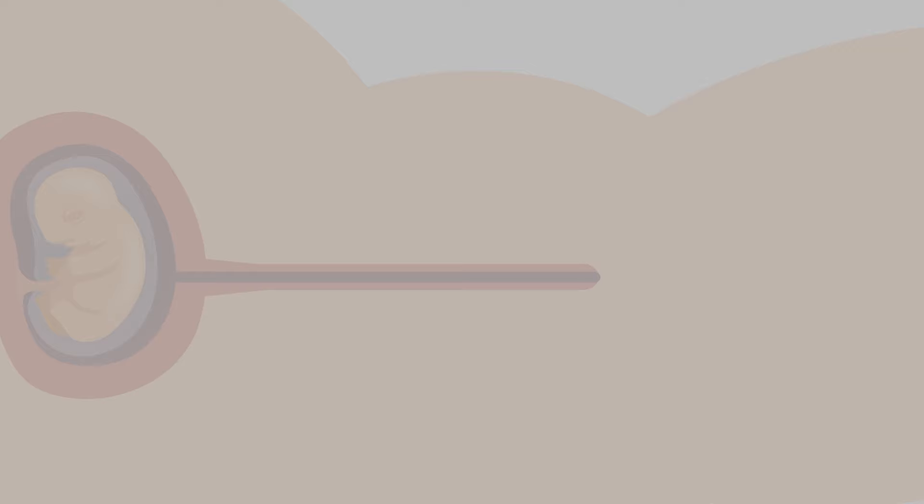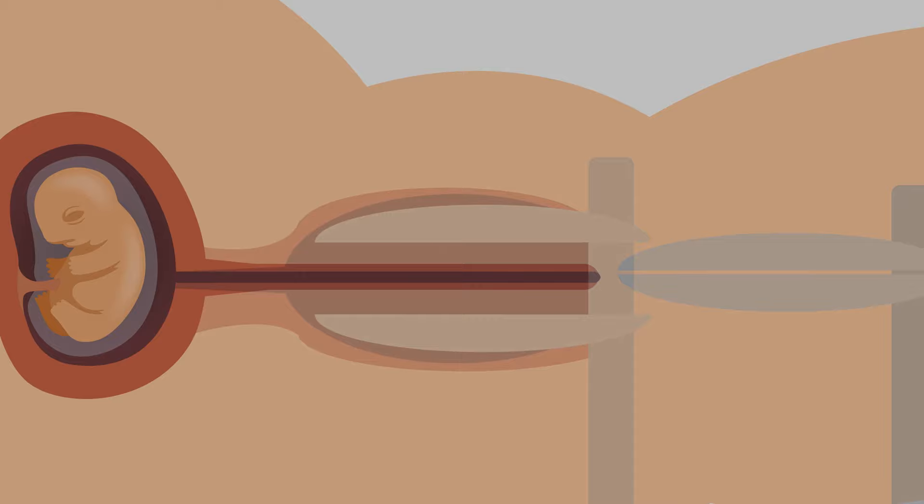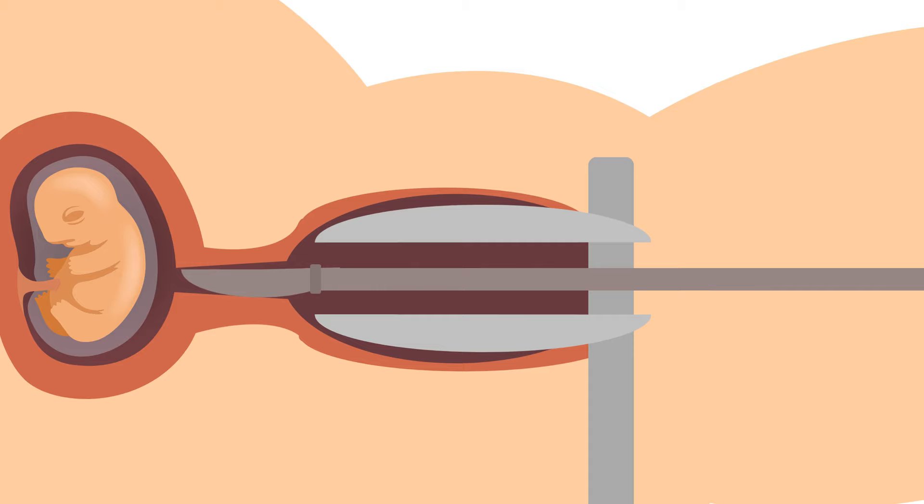The abortionist will insert a tool called a speculum into the woman's vagina to open it. Then he uses tools called dilators, which come in various sizes, to enlarge the cervix. He needs to enlarge the cervix so he can gain access to the baby in the uterus.